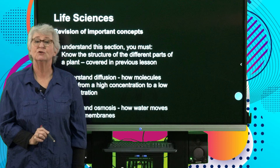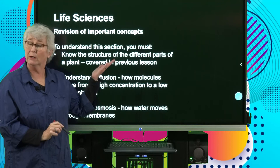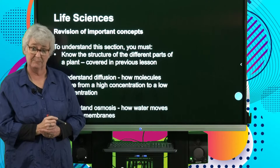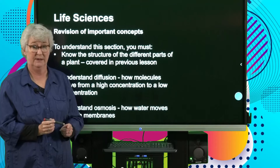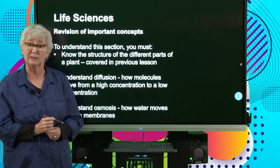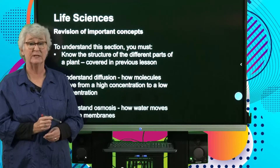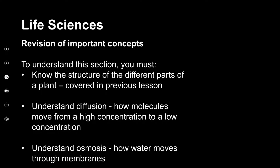To understand this section, you need to know certain concepts from the previous lesson — for example, what all the different parts of the plant look like and what types of tissues are found in them. You also need to know two very important concepts: diffusion, which is how substances move from a high concentration to a low concentration, and osmosis, which is how water moves through membranes. I'm going to briefly revise those two concepts.